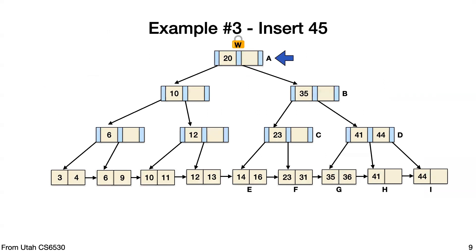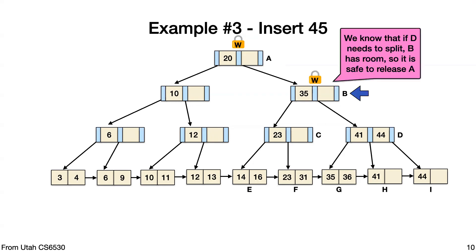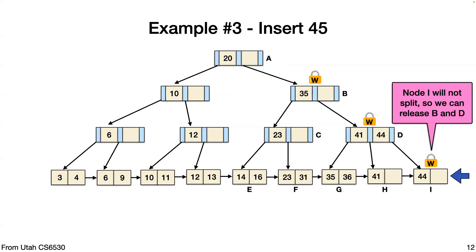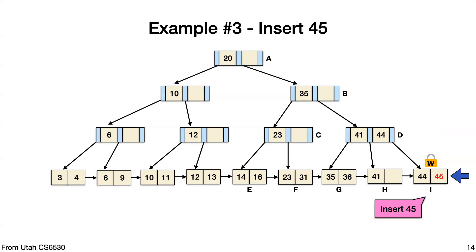Going through an insert example: we're inserting 45. We take the write lock on the root. We go down and see that node B has space, so we can release the lock on A. We keep traversing down. We need to hold D because if it needs to split, we'd need to promote to B. Once we get to the leaf, we know nothing above needs a new element, so we release those locks and put 45 into the leaf node.